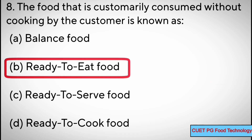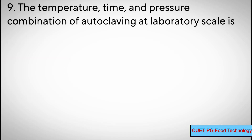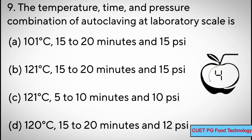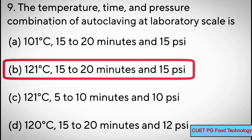Question number nine: the temperature, time, and pressure combination of autoclaving at laboratory scale is — options: A) 101°C, 15–20 minutes, 15 psi; B) 121°C, 15–20 minutes, 15 psi; C) 121°C, 5–10 minutes, 10 psi; D) 120°C, 15–20 minutes, 12 psi. Correct answer: B) 121°C, 15–20 minutes, and 15 psi.